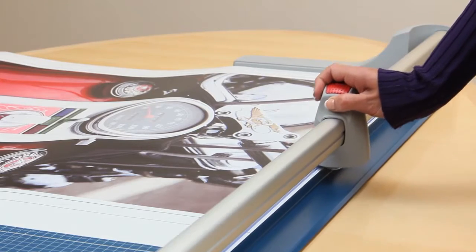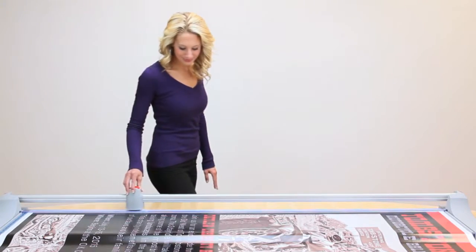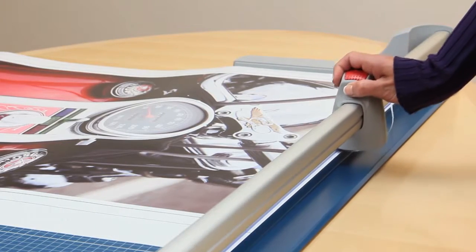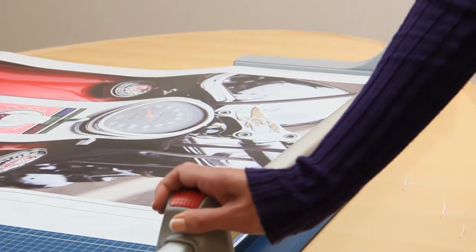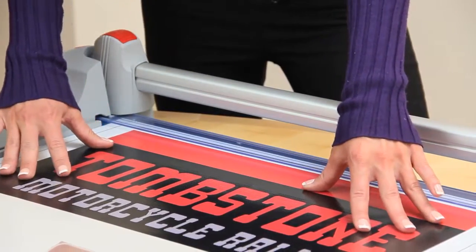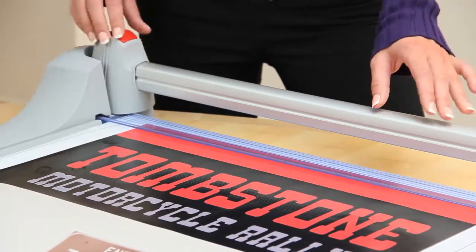As with all Dahle products, safety is at the forefront of design, and this trimmer is no exception. To keep hands in the safe zone, the trimmer's blade is almost entirely protected, which virtually eliminates the chance of injury.